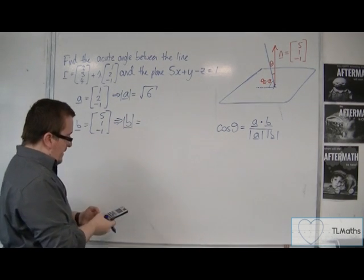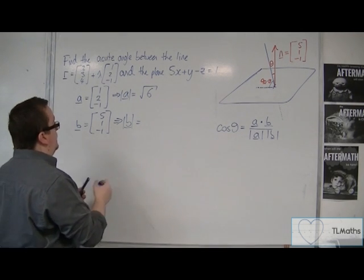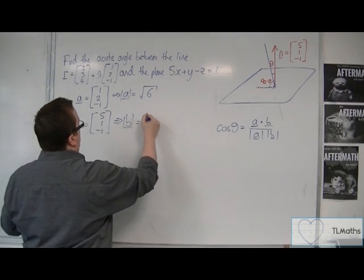And the length of b is 5 squared plus 1 squared plus 1 squared square rooted. So 3 root 3.